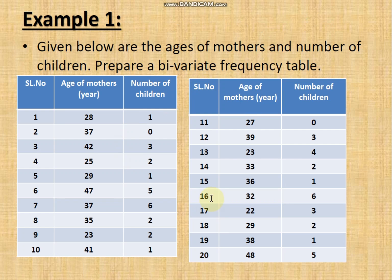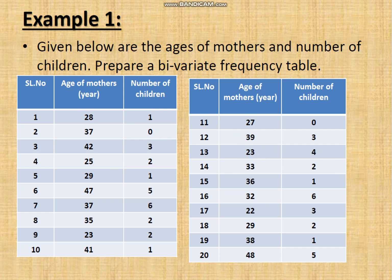Let us look at an example. The data given is the age of mothers and the number of children. The first mother's age is 28 and she has one child; the second mother's age is 37 and she has no child; the third mother's age is 42 and she has three children. We have to construct a bivariate frequency table from this data.